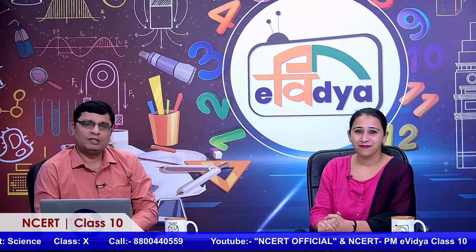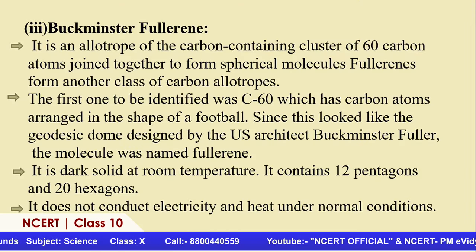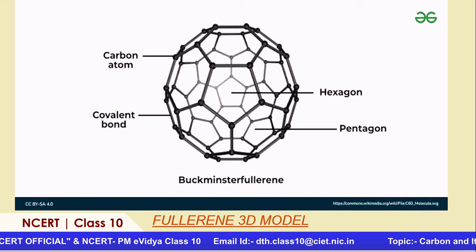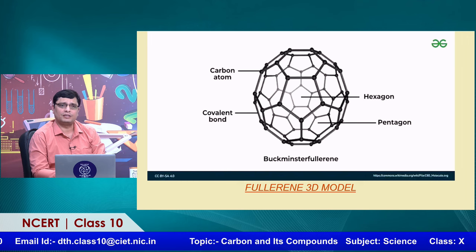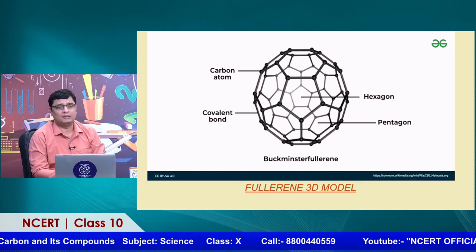Carbon also has one more allotrope called buckminsterfullerene, also known as C60. It is similar in having carbon-to-carbon bonds. In this structure, 60 carbon atoms form a bulky football-like structure — the fullerene form. C70 and C80 carbon fullerenes also exist and are being manufactured in different forms.